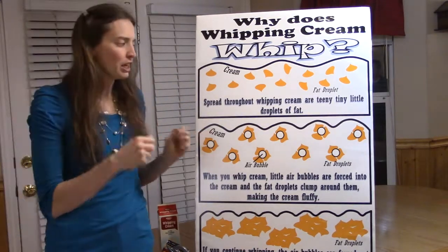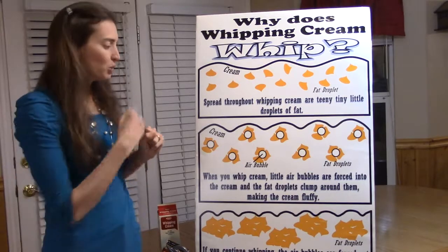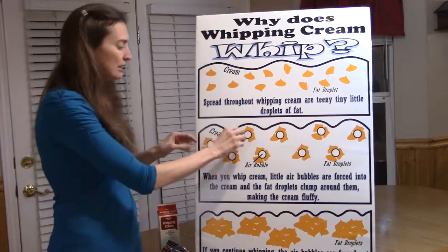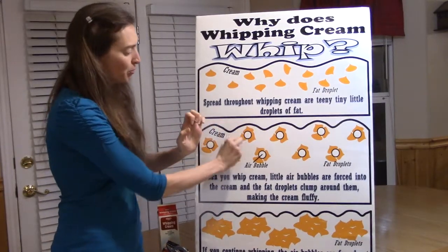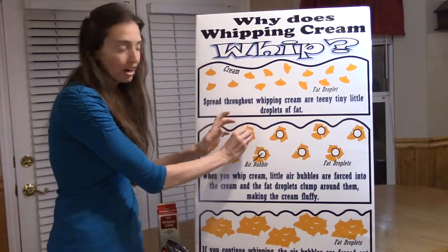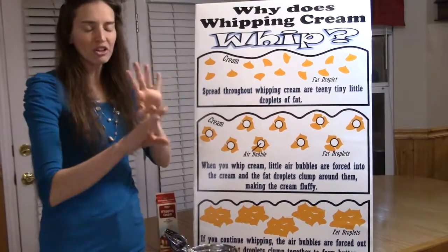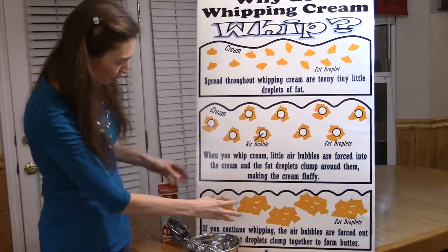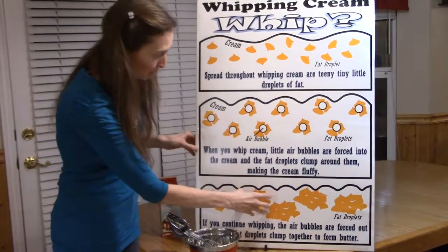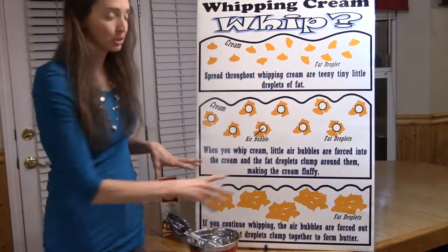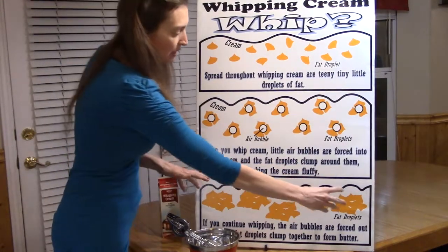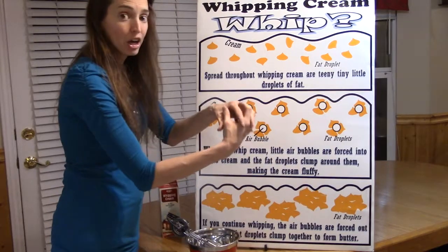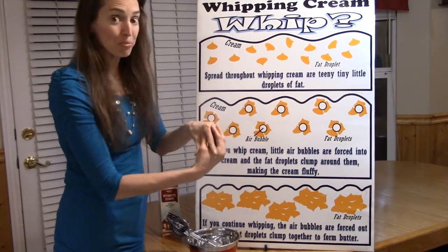Now if you keep whipping it and keep putting more and more into it, eventually these little globules of fat wrapped around the air get all knocked together, and after some time the air actually gets pushed out. What you end up with are great big clumps of fat, and the more you beat it, those clumps get closer and closer together until they all come together — and now you have butter.